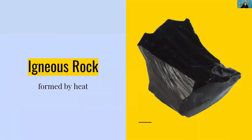Igneous rocks are formed from heat. The rock you see here is obsidian. They're typically made when volcanoes erupt and their magma, now lava, cools down. The lava cools and solidifies into an igneous rock.